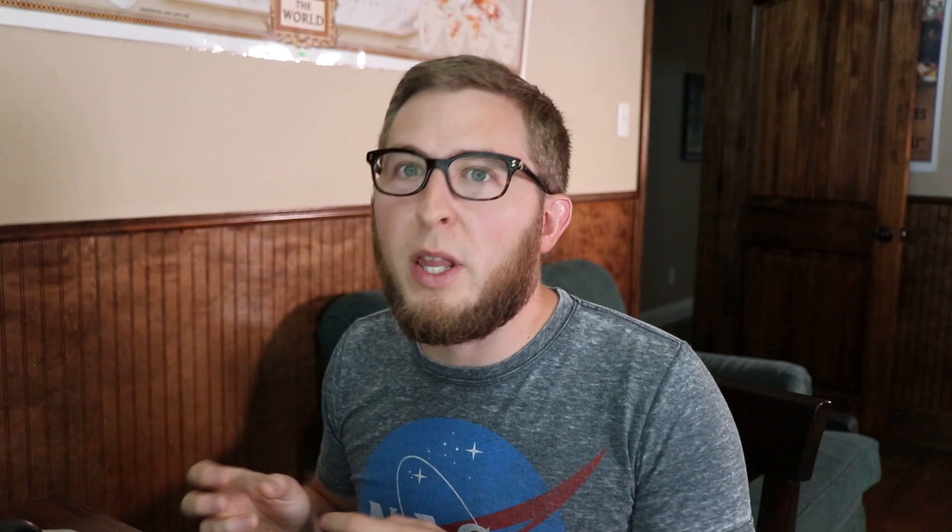The fifth and most often forgotten section is model governance. Governance teams sit on both the development and validation sides. Governance tracks model inventory — is the model in inventory? When findings are issued, governance tracks to make sure developers follow up and fix them within a specified timeframe. Model development requests also need to be documented so validation can see the paper trail from business request through development to validation.